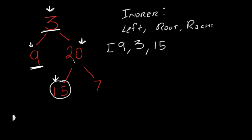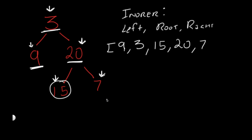We go back to 20 and add it to our list. Then we look at 20's right child, which is 7. With 7 as our root, we look at its left child — doesn't exist — so we add 7, then check its right child which also doesn't exist. And we're done. This is what our in-order traversal for this tree looks like.